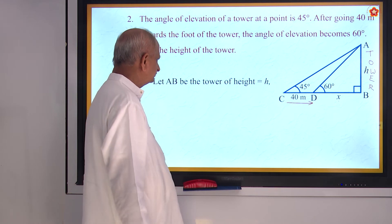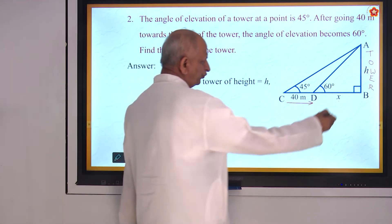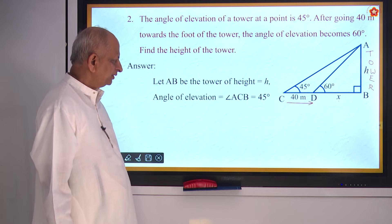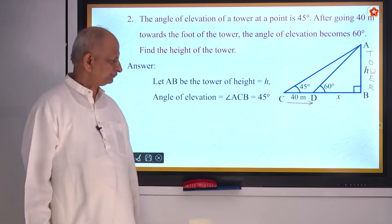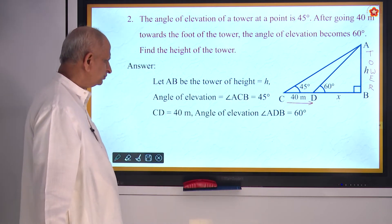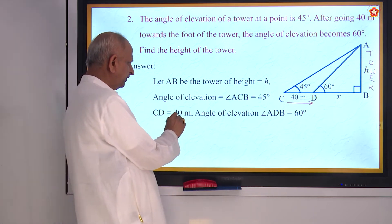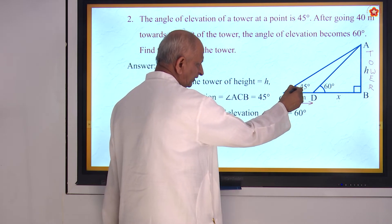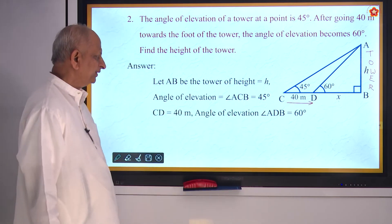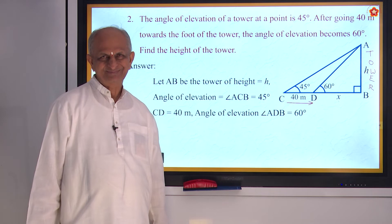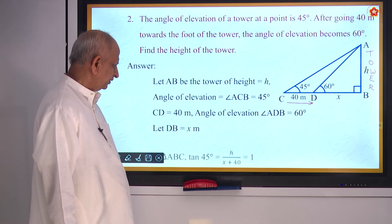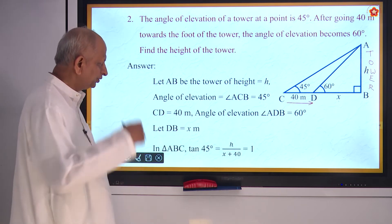They are asking for the height of the tower. To find h you must have two relations. You can think of using tan. The angle of elevation is 45 degrees and CD is 40 meters. After moving 40 meters towards the tower, the elevation becomes 60 degrees — it was 45, then became more. So let DB be x. Now take the relation of tan.